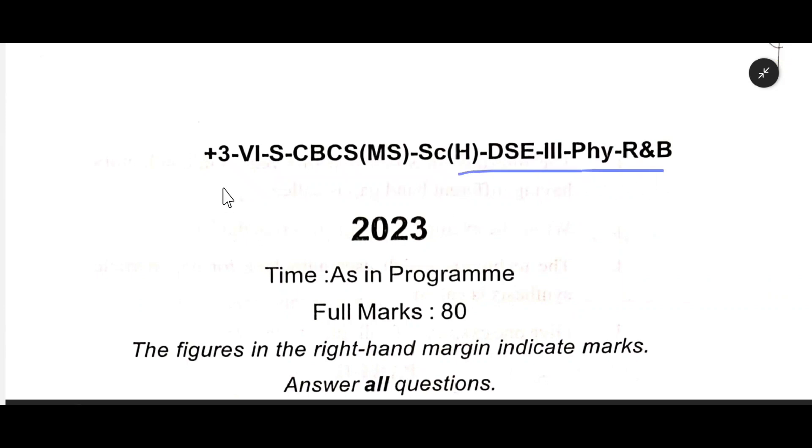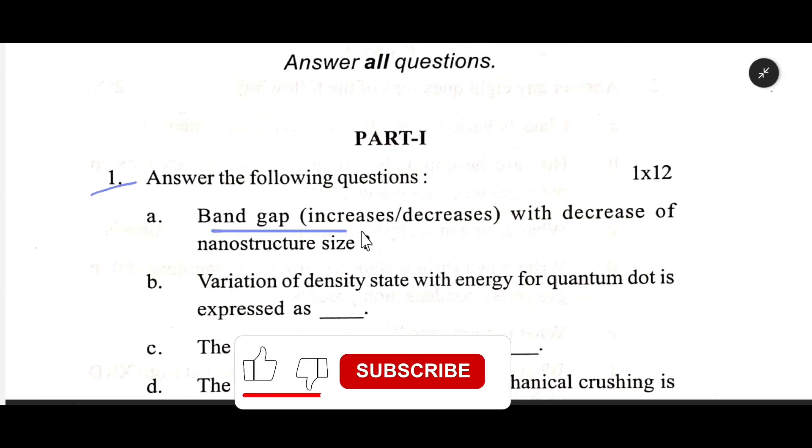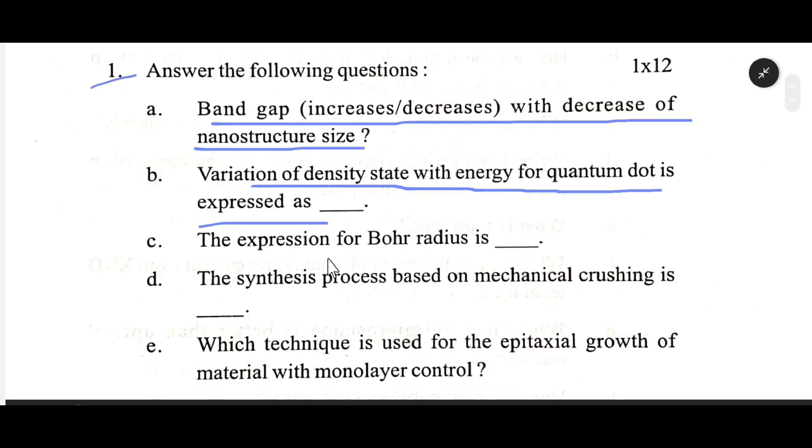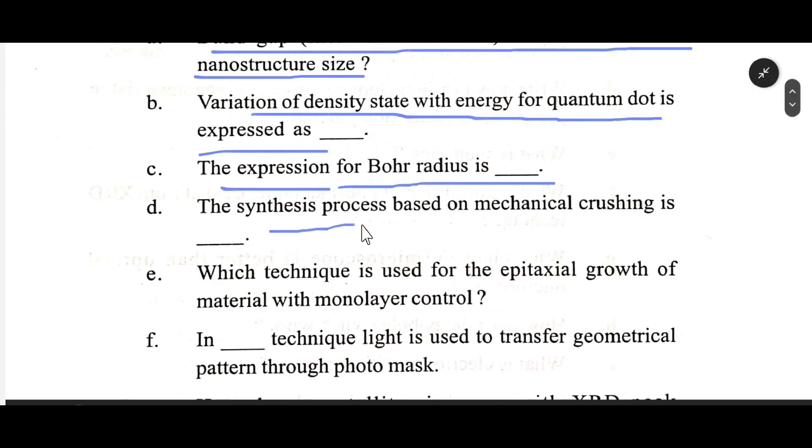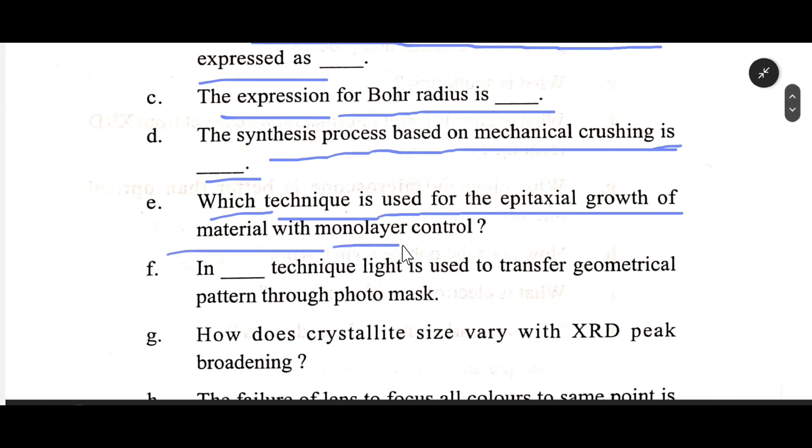DAC3 Physics, 6th semester, number one. Band gap increases or decreases with decrease of nanostructure size. Variation of density state with energy for a quantum dot is expressed as dash. The expression for Bohr's radius is dash. The synthesis process based on mechanical crushing is dash.